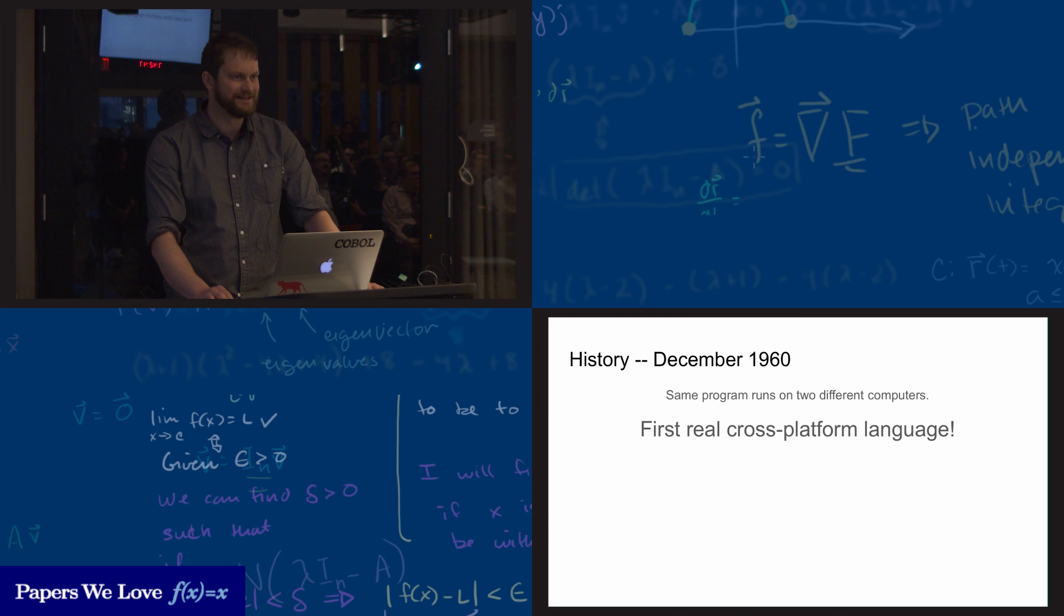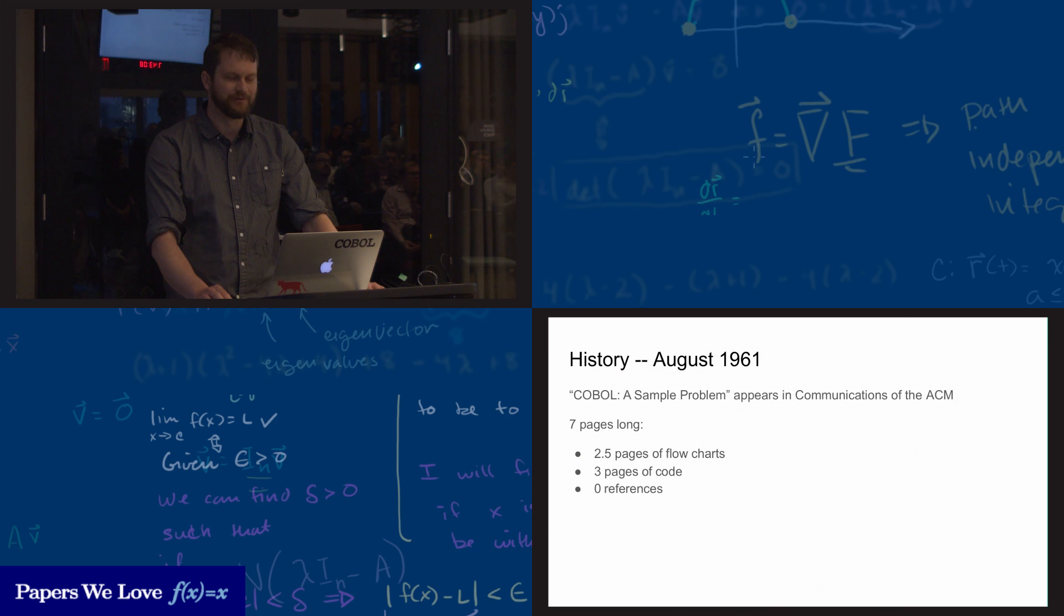A lot of work is done in 1960 to develop some compilers based on the recommendations of the short-range committee. In December 1960, the same program runs on two different computers. At that point, COBOL is the first real cross-platform language. Fast forward a little bit to August 1961. COBOL, a sample problem, appears in the communications of the ACM. It's seven pages long, two and a half pages of flowcharts, three pages of code, and there are zero references to other works. If you're looking at this from a historical academic perspective...